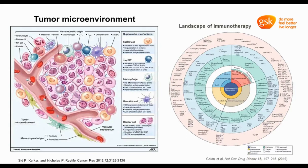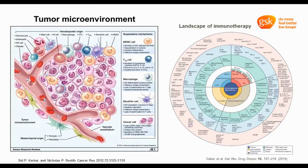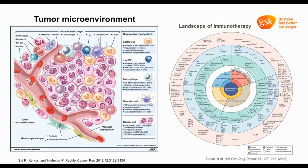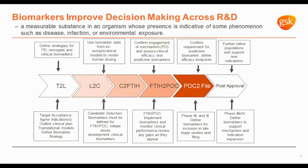We can briefly divide tumors into three categories: hot, cold, and altered. Currently approved checkpoint inhibitors work best in patients with hot tumors, but only a small portion of patients can benefit from this treatment. For patients with cold or altered tumors, alternative treatments should be considered. The problem is how to stratify patients, give each the most effective treatment, and predict clinical outcomes. The answer relies on biomarkers.